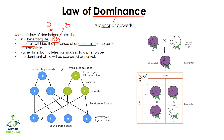We write the dominant allele with a capital letter and the recessive one with a small letter. So in a heterozygote having capital R and small r, only the dominant trait — round-shaped seeds — will be shown, while the other trait, wrinkled-shaped seeds, will not be expressed in the phenotype. The dominant alleles will be expressed exclusively.